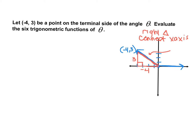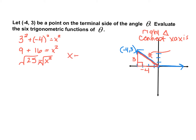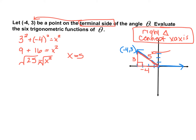Let's find the missing hypotenuse value. Using the Pythagorean theorem: 3 squared plus negative 4 squared equals x squared. So we have 9 plus 16 equals x squared, which is 25 equals x squared. Taking the square root of both sides, we find that x equals 5. So I'll replace that with 5. I drew my angle with a terminal side ending at that point, drew a right triangle connecting down to the x-axis, and found the missing side length.